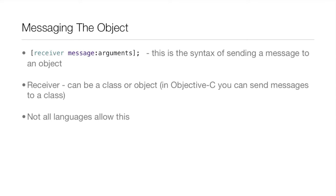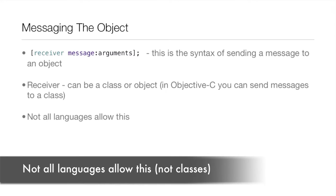The basic syntax of messaging is: you have the receiver, the actual message itself, and then arguments. The receiver can be a class or an object. In Objective-C you can send messages to a class — this is pretty cool if you're coming from another language like C++. Not all languages allow this, so it's a neat little feature.